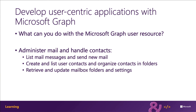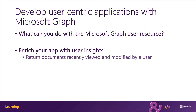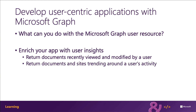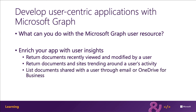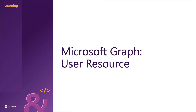You can also maximize relevance in your application by promoting recently used or trending documents and contacts associated with the user — such as returning documents recently reviewed and modified by a user, returning documents and sites trending around a user's activity, and listing documents shared with a user through email or OneDrive for Business. Now let's explore the Microsoft Graph User Resource Endpoint.